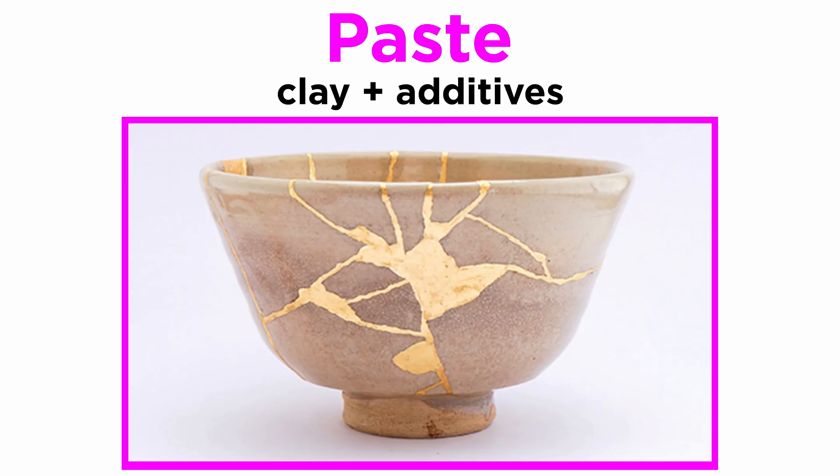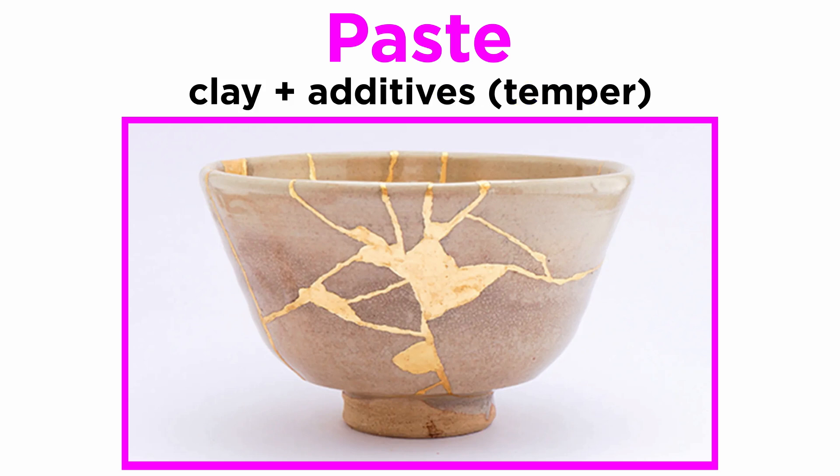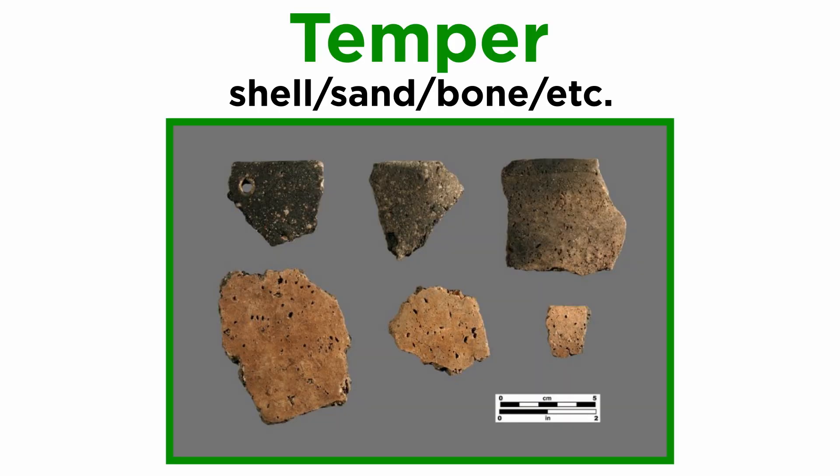Paste refers to the clay and additives used to make the ceramic. Other materials must be added to raw clay to help it hold together, otherwise it wouldn't survive the firing process. Materials added to a paste are called temper. Common tempers include shell, sand, bone, and many others.